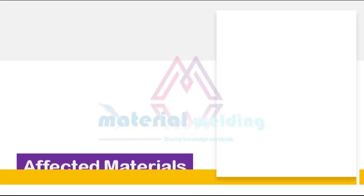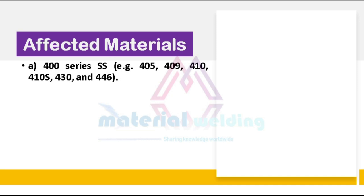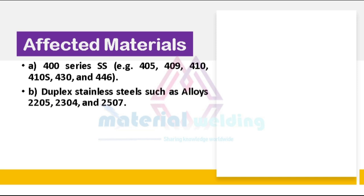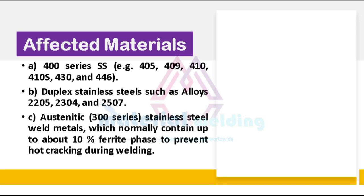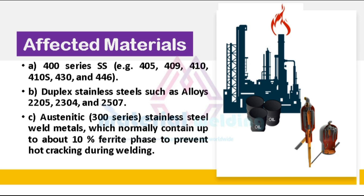The materials affected by 885 degrees Fahrenheit embrittlement include the 400 series stainless steels, for example SS 405, 409, 410, 410S, 430, and 446. Duplex stainless steels such as alloys 2205, 2304, and 2507 are also affected. Additionally, austenitic 300 series stainless steel weld metals, which normally contain up to about 10% ferrite phase to prevent hot cracking during welding, are susceptible.